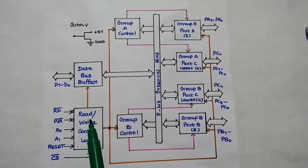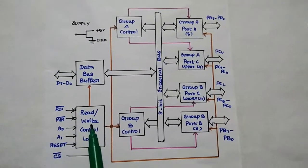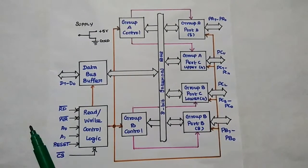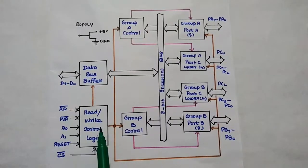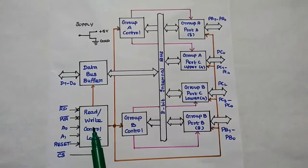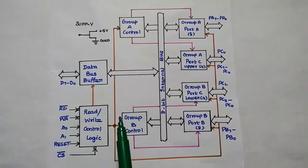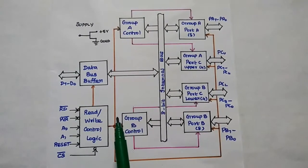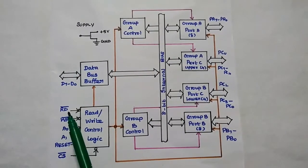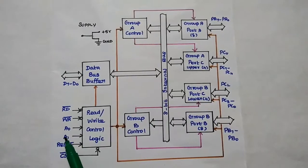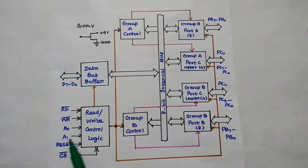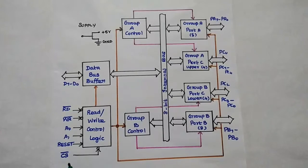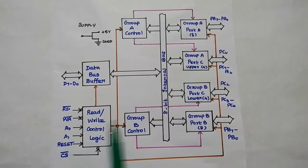The Read/Write Control Logic unit receives 6 control signals from the CPU to generate control signals for operating the 8255A. These 6 control signals are: Read bar, Write bar, A0 and A1 (the two address lines from the CPU), Reset pin, and Chip Select pin.